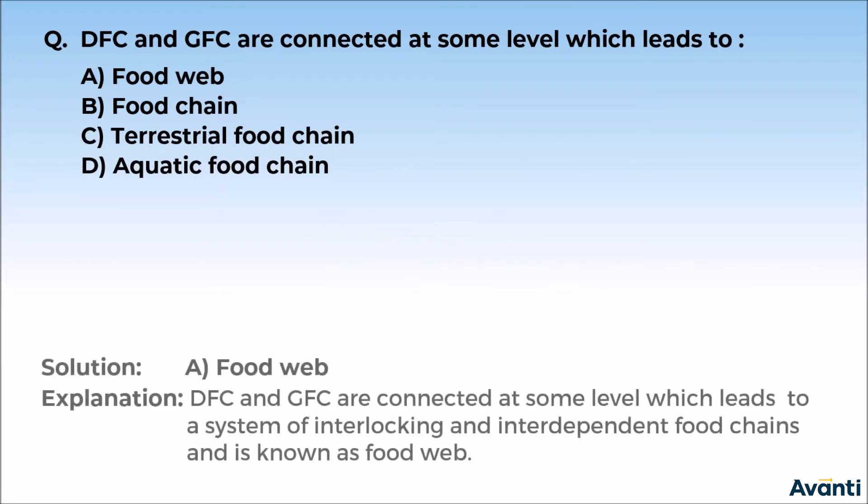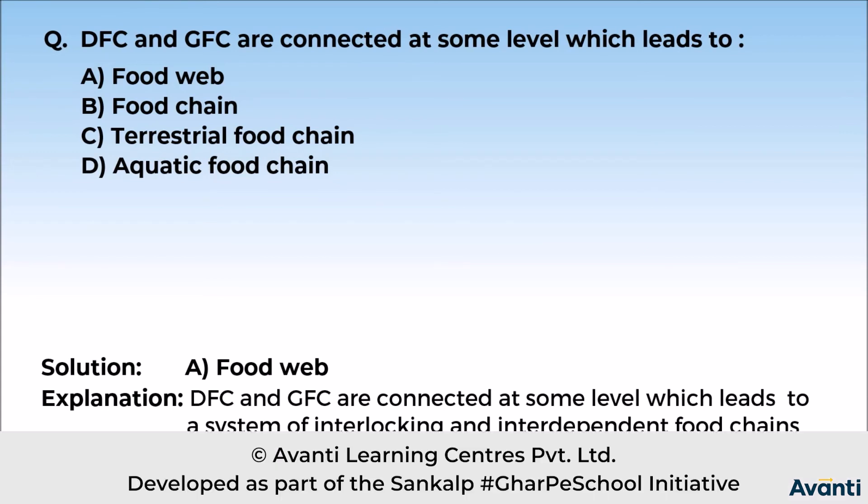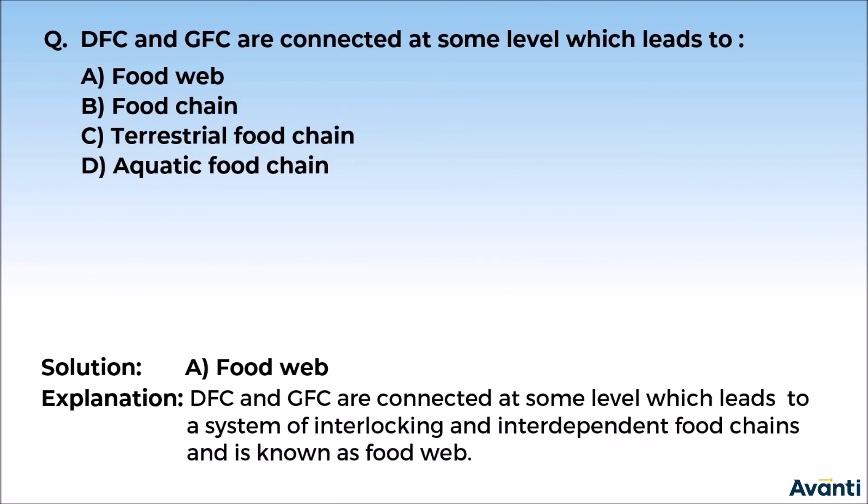So our correct answer is option A, food web. We have learned that the detritus and the grazing food chain are connected at some level. And in this level, there is an interlocking, an interdependent food chain which is called food web.